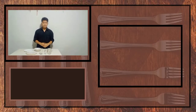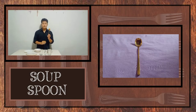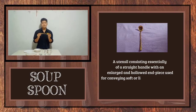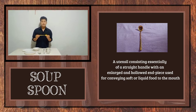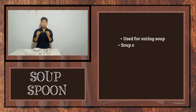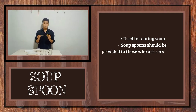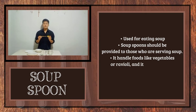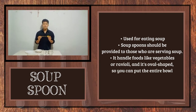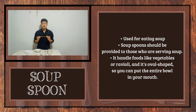I have three examples of tableware. I have here a soup spoon — a utensil consisting essentially of a straight handle with an enlarged and hollowed end piece, used for conveying soft or liquid food to the mouth. It is used for eating soup, should be provided to those who are served soup, also handles foods like vegetables or ravioli, and it is oval shaped as you have noticed.